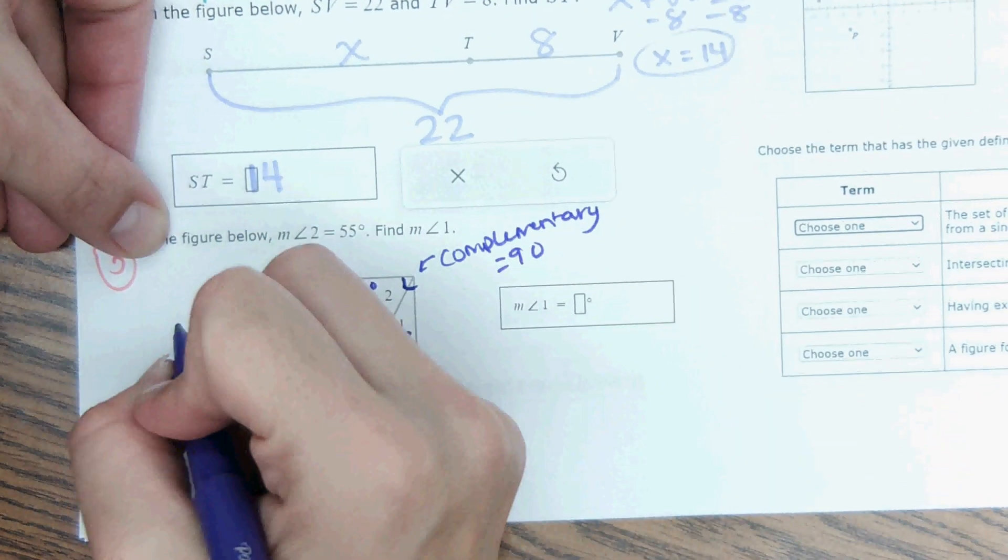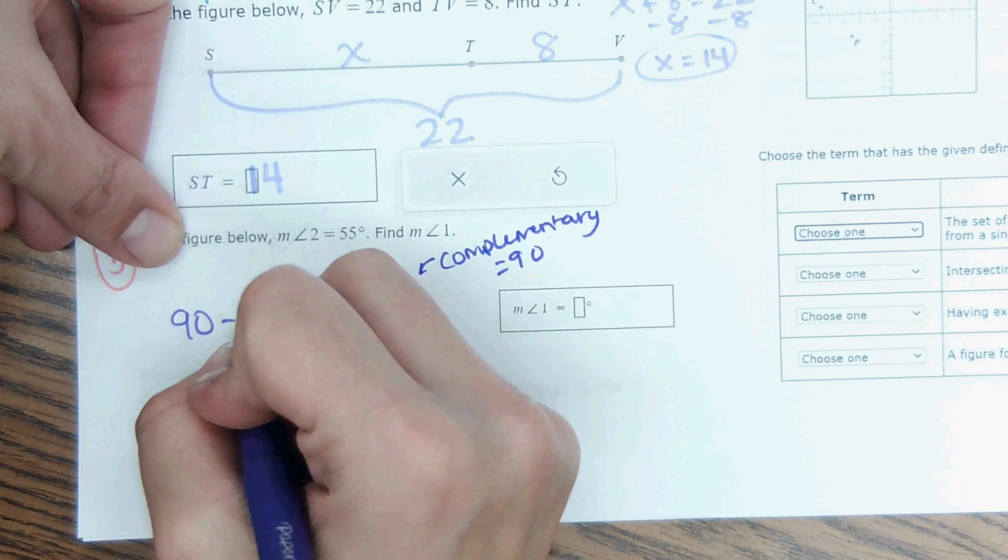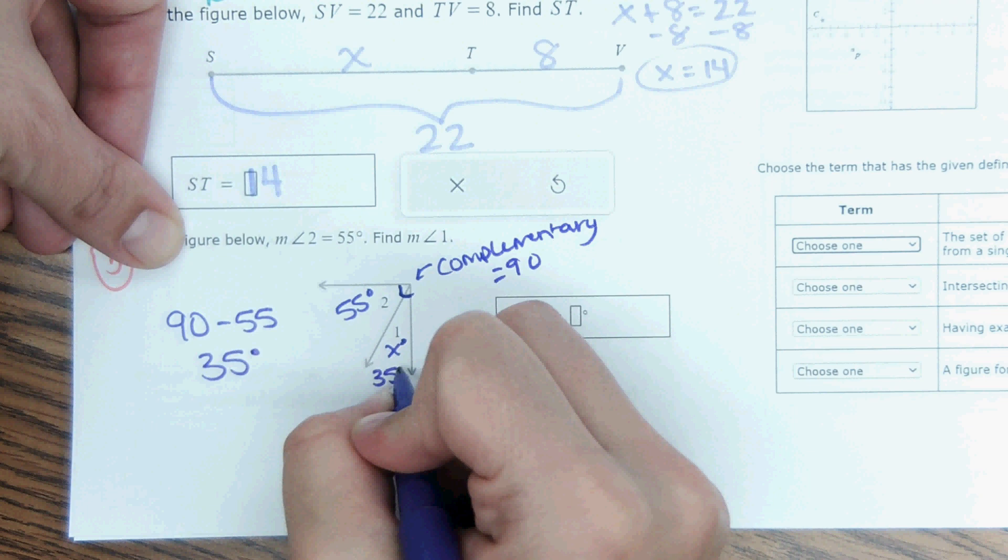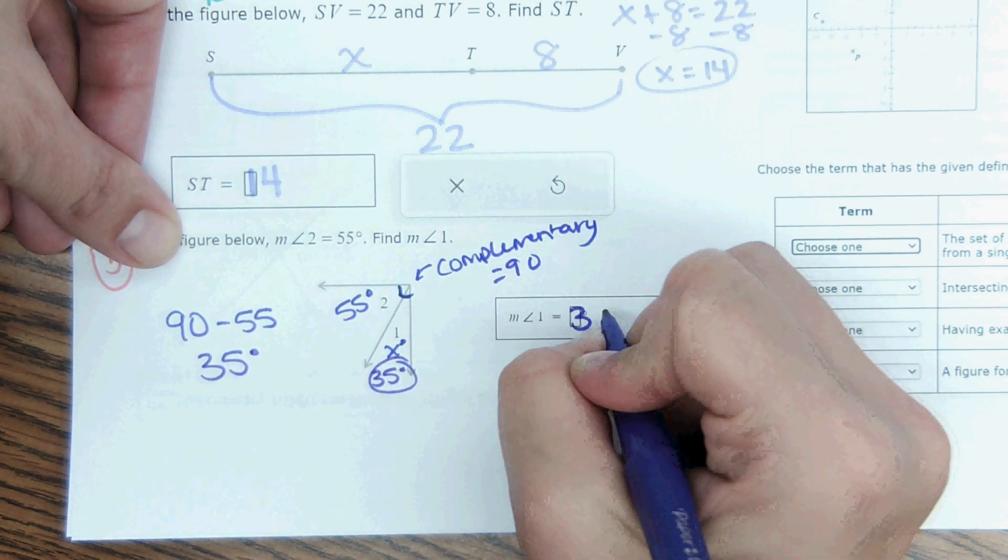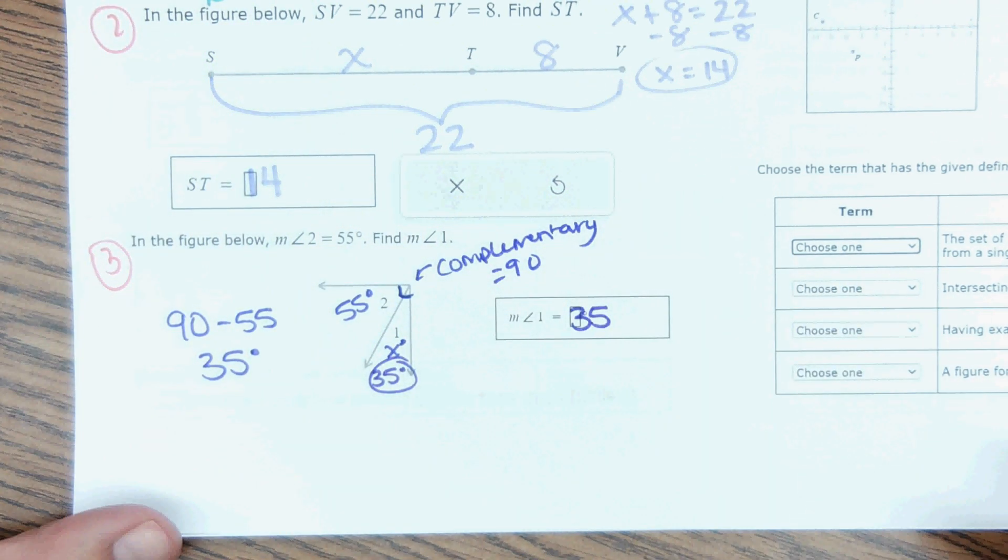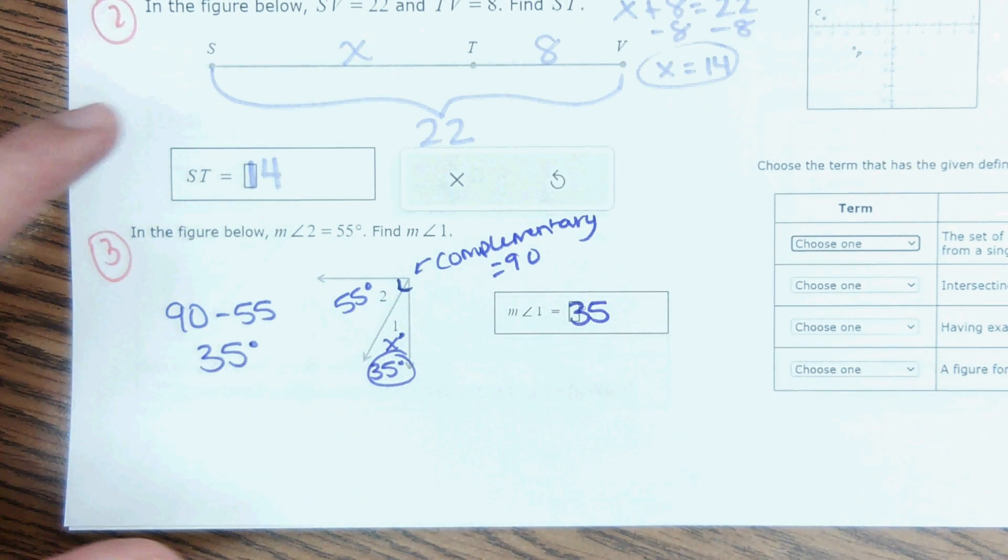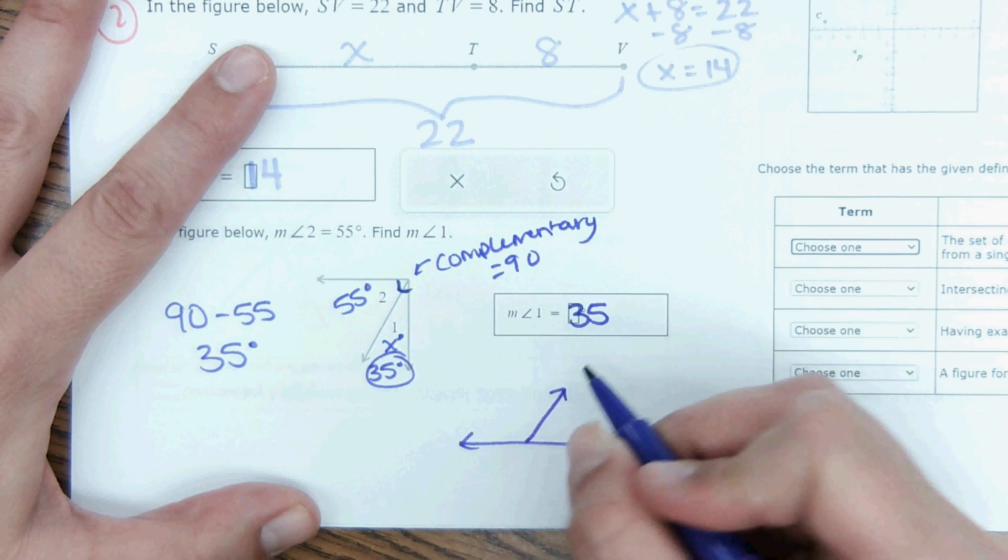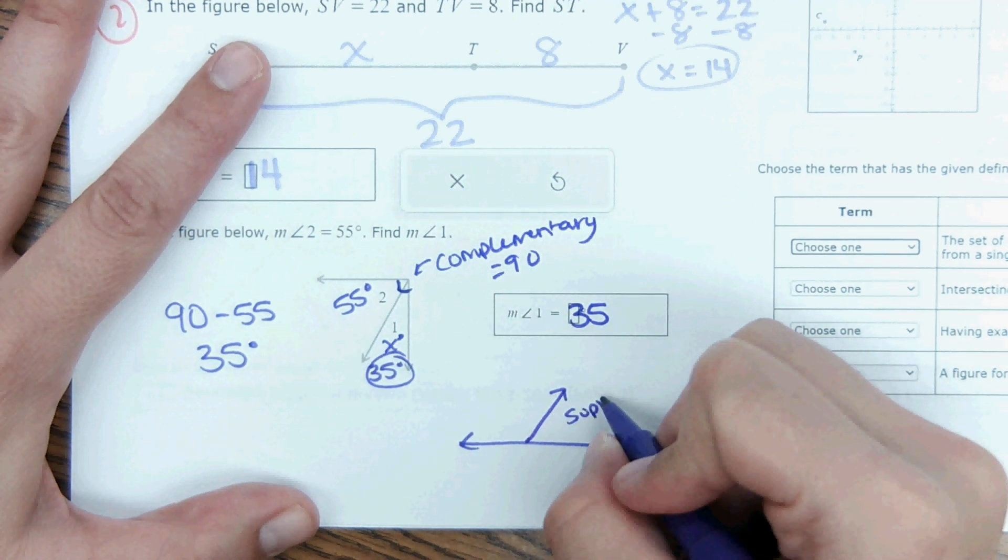So, to find this missing angle, you would do 90 minus 55. It comes out to 35 degrees. And then you type that in here. So, for this question set, they'll either be complementary angles or they'll be supplementary angles. So, if it forms a straight line, then they're supplementary.